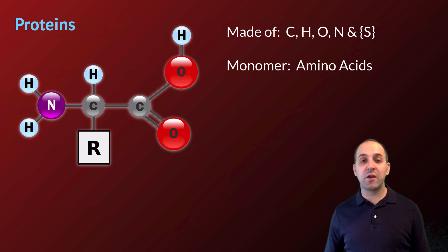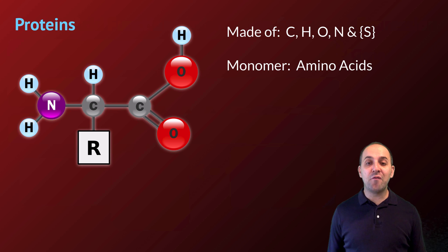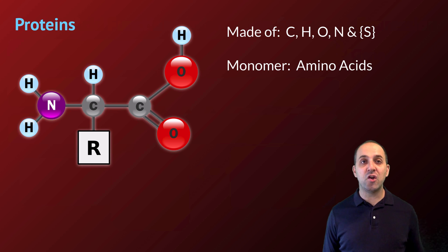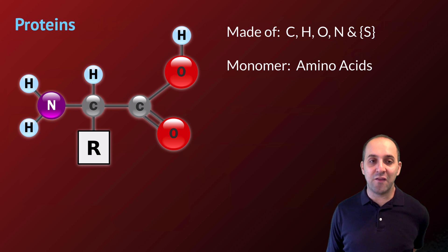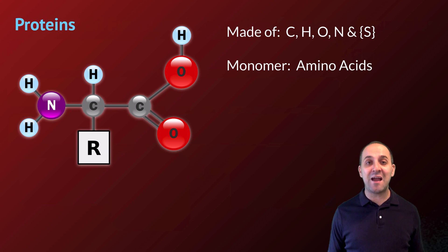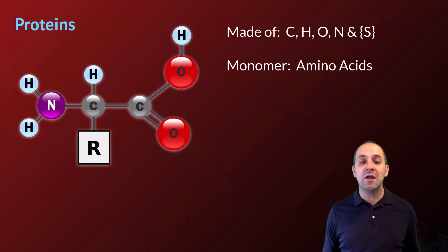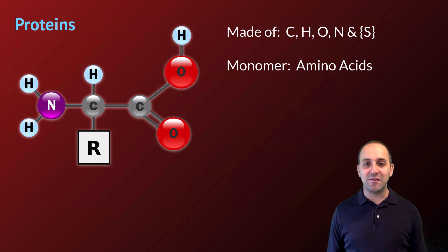Proteins are biological molecules made out of carbon, hydrogen, oxygen, nitrogen, and occasionally sulfur. The monomer of a protein is an amino acid, and you see the general structure of an amino acid here in this image. We've got an amino group — that NH2 group — and a carboxyl group, which functions as an acid on the other side. That's the C double-bonded to the O, single-bonded to the OH, which is why they're called amino acids.